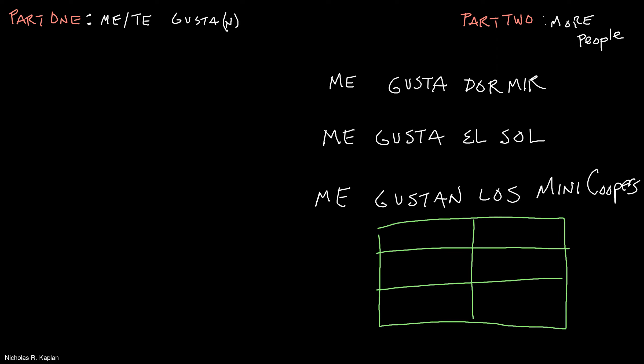So we use box 3, that gusta, when we are liking an infinitive or a singular noun. And we use box 6, the gustan, when we are liking a plural noun.